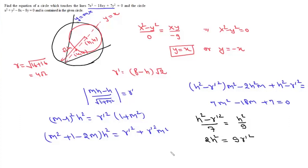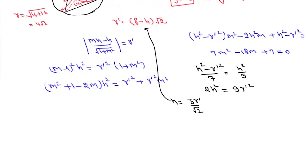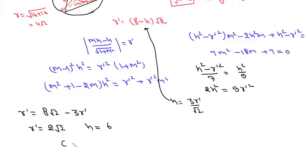From 2h² = 9r'², we get h = 3r'/√2. Substituting into the radius expression r' = (8 - h)√2, we get r' = 8√2 - √2h, and since √2h = 3r', solving gives r' = 2√2 and h = 6. So the center of this circle is at (6, 6) and its radius is 2√2.